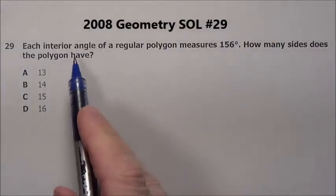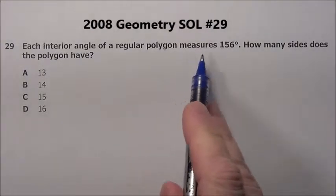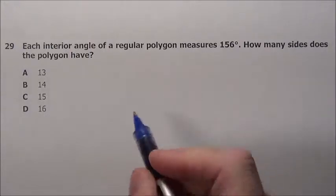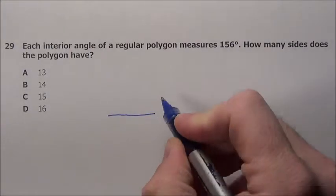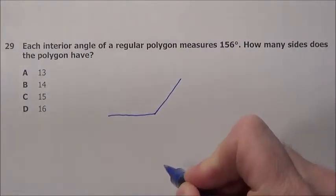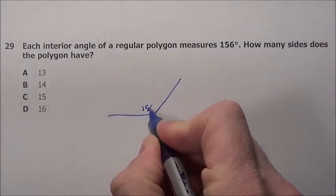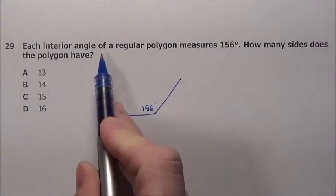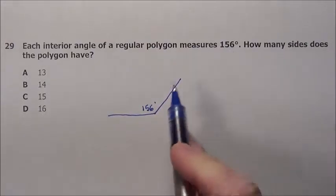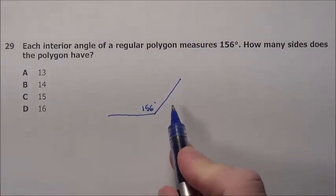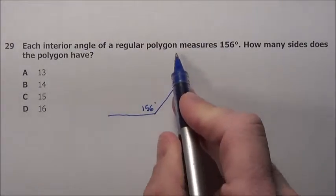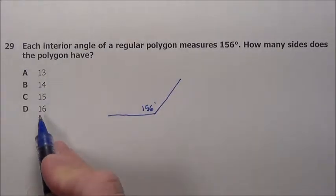Problem 29 says each interior angle of a regular polygon has a measure of 156 degrees. So we have some polygon, we don't know how many sides, that's what they want us to figure out. We know this interior angle is 156 degrees. The interior angle of a regular polygon measures 156, so that's 156. We want to know if that's true, how many sides does this polygon have.